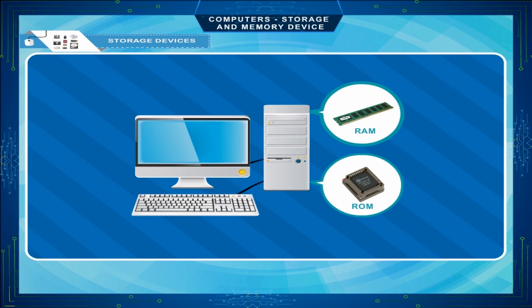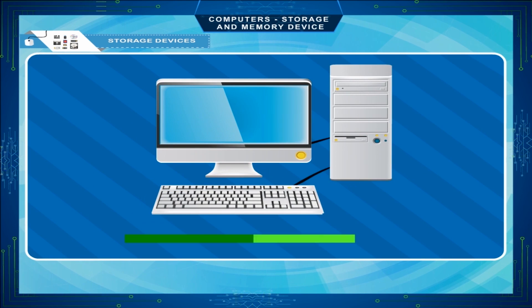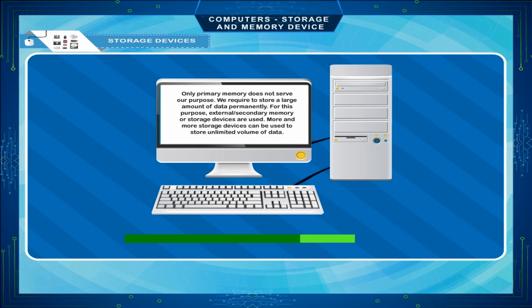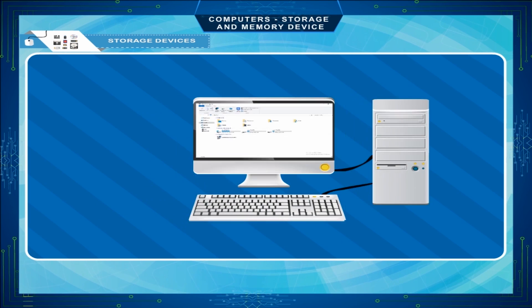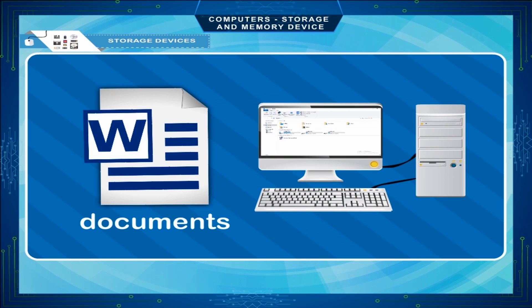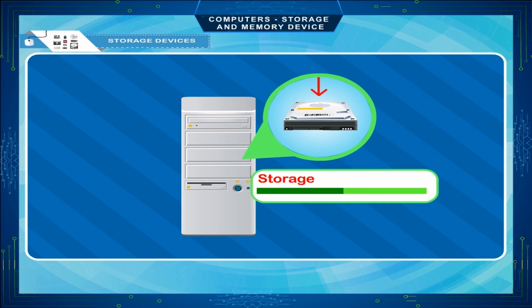Primary memory is small in size but faster than secondary memory. When we work on our computer, the work is saved on primary memory. When we give the save command to save our file with a name, only then the file is saved on the secondary memory.